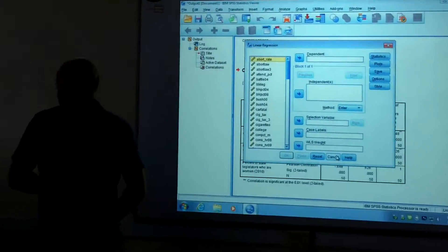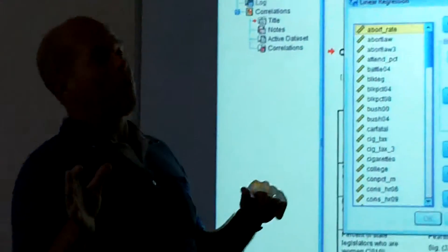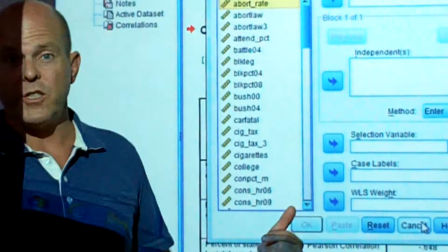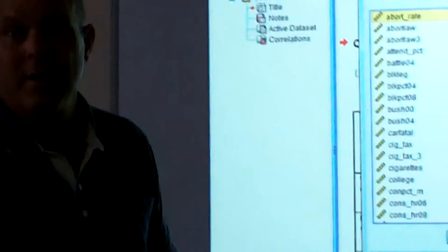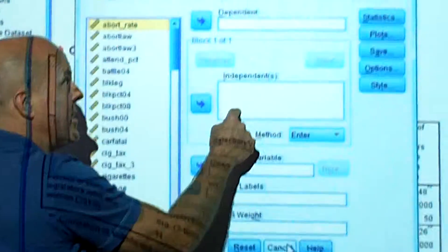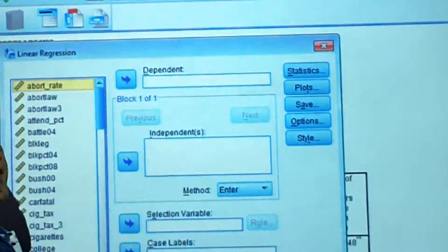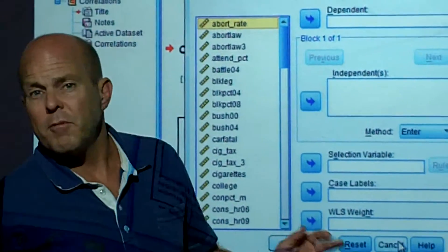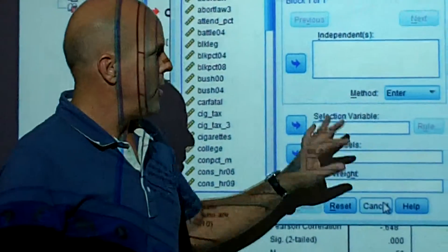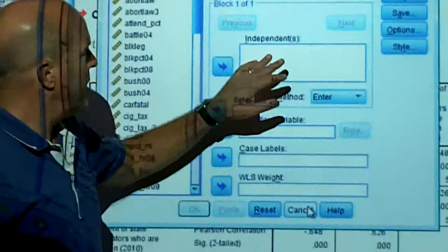Alright, so we're back. So now we just did a bivariate correlation. Now we're going to do a simple linear regression. It's called a simple linear regression because there's going to be just one independent variable and one dependent variable. Frankly, you'll never see a simple linear regression, so this is really more of a teaching tool here. But let's do it.